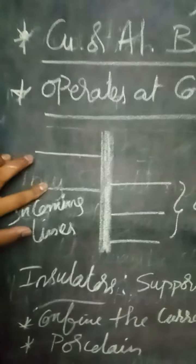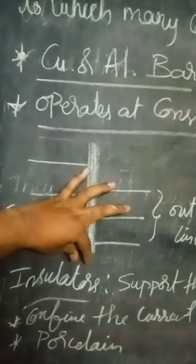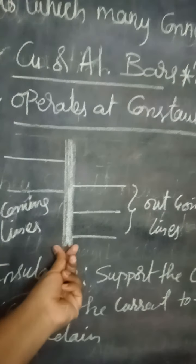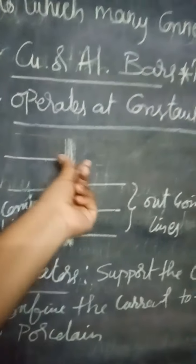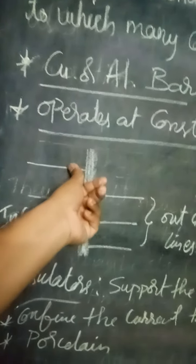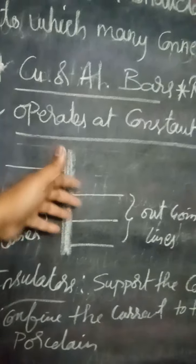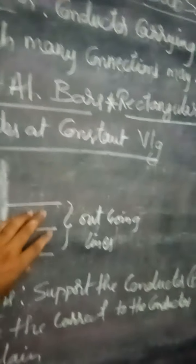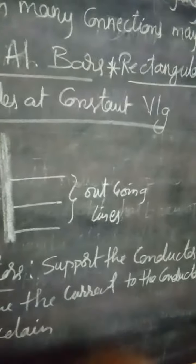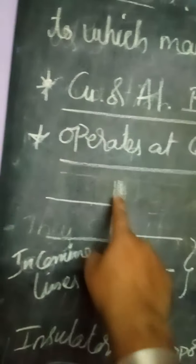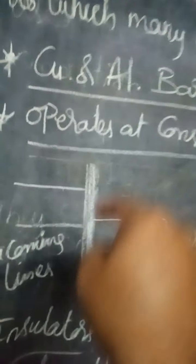The bus bar is in a rectangular shape. When we have different currents from different sources, adding them together means more total current flows in the conductor, so the size of the bus bar must be greater to withstand the heavy current. That is why it is called a bus bar — n number of currents are entering into it.